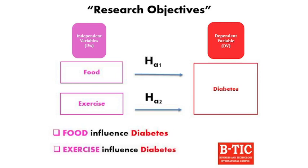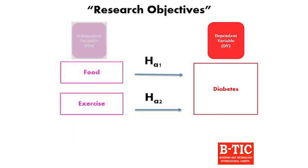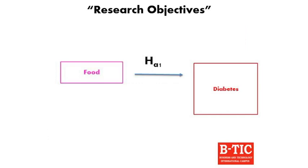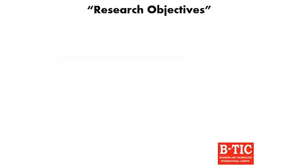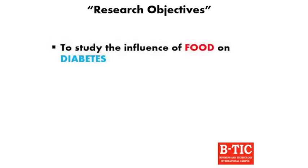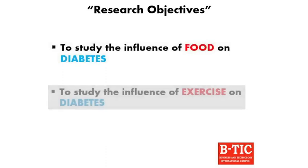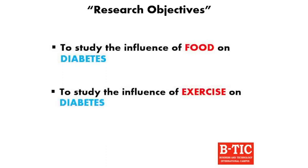Based on this, let me develop the objectives. The main objective is to study the factors that influence blood sugar. The specific objectives break the main objective into pieces: number one, to study the influence of food on blood sugar; number two, to study the influence of exercise on blood sugar.